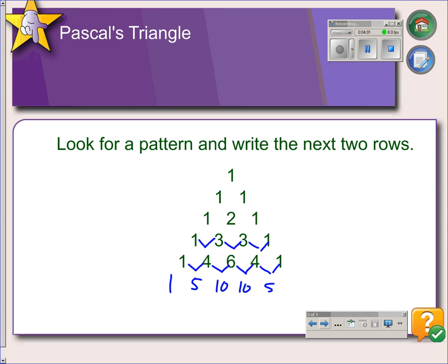And then the next row would be 1, 6, 15, 20, 15, 6, and 1. So there's Pascal's triangle.